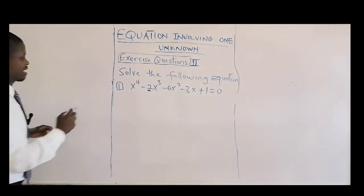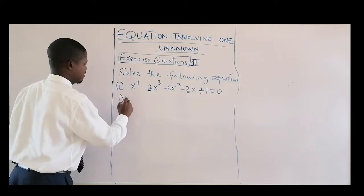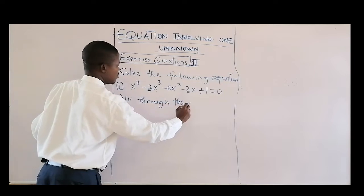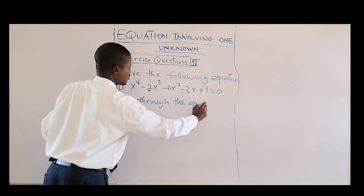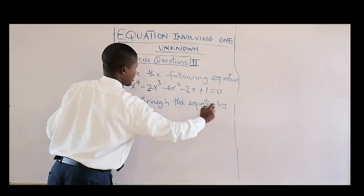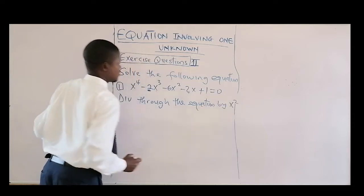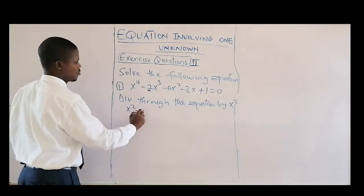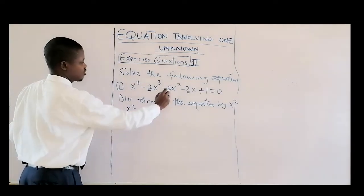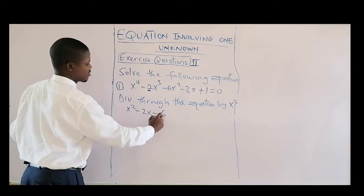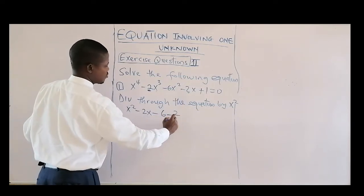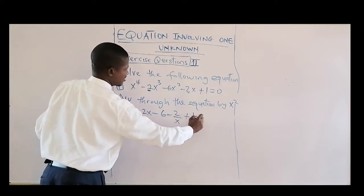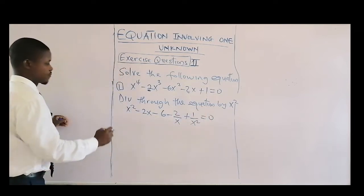In that case, we can divide through the equation by x squared. So if you do that, this will give us x squared, equal to minus six, minus two over x, and one over x squared, equal to zero.